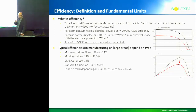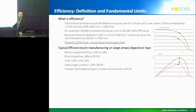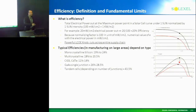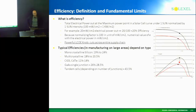Gallium arsenide single junction is 26 to 28%. Tandem cells — which are multiple junctions stacked together — depending on the number of junctions, for example three junctions is 43.5%. The cadmium cells usually have a place now because they're using the concentrated system.